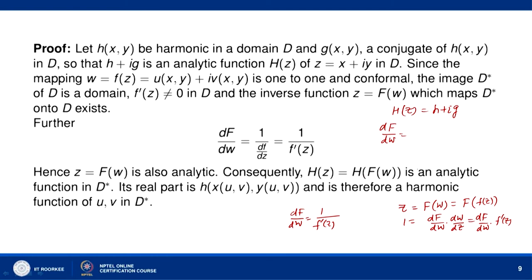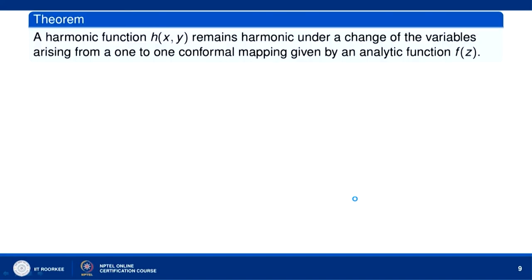Since H(z) = H(φ(w)) is an analytic function of an analytic function, it is analytic in D*. The real part of H(z) is H(x,y) where x and y are functions of u and v. So this real part is a harmonic function of (u,v) in D*. Therefore, a harmonic function remains harmonic under a one-to-one conformal mapping.